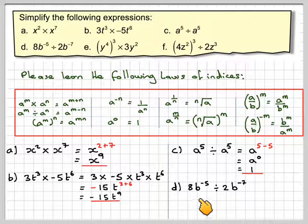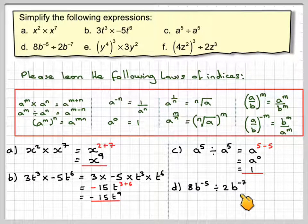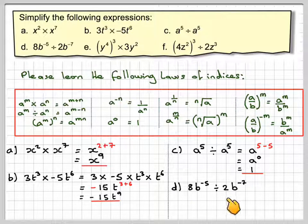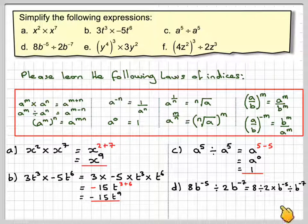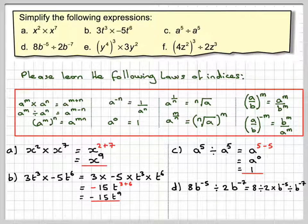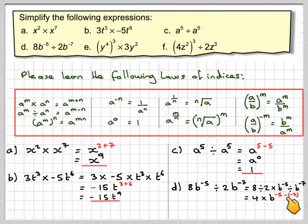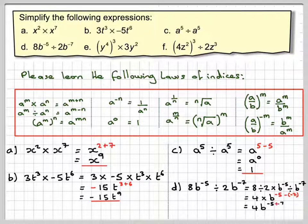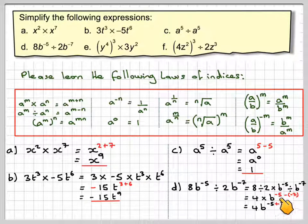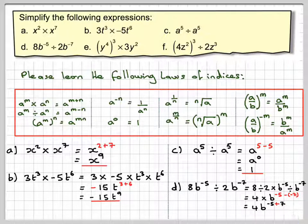D, 8b to the minus 5 divided by 2b to the minus 7. So what we do is we separate up 8 divided by 2, and then we multiply that by b to the minus 5 divided by b to the minus 7. 8 divided by 2 is 4. And this one, because we are dividing, then we have to write b to the minus 5 minus minus 7. So we have to be careful with the negative signs there. So that becomes 4b to the minus 5, and minus times minus, taking away a minus is plus 7, so it becomes 4b squared.